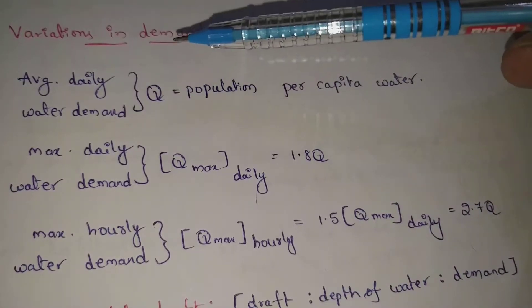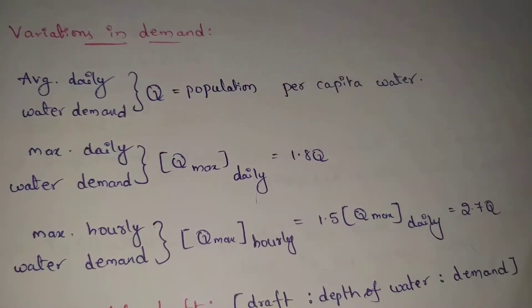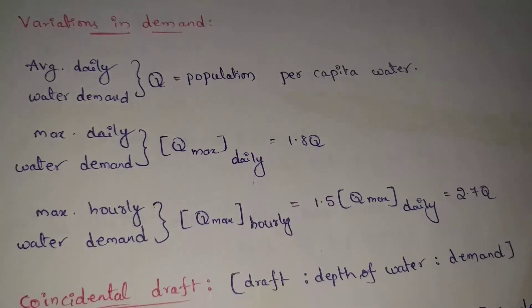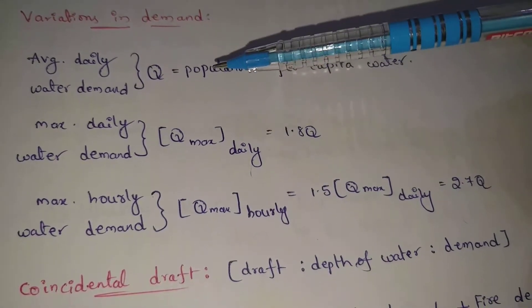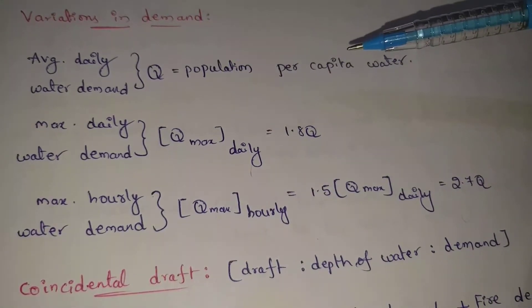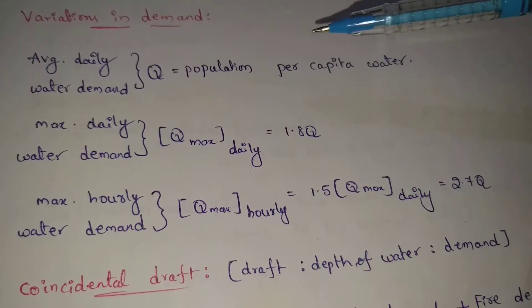Next topic, variation in demand or water demand. First one, average daily water demand: Q equals population times per capita water.